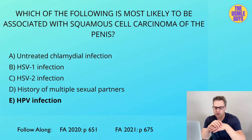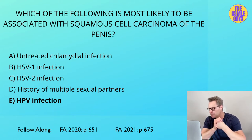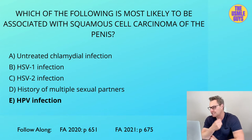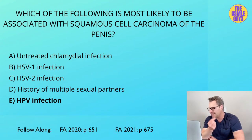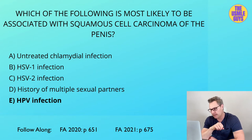A couple of known precursors of SCC of the penis include bowenoid papulosis, which is a premalignant focal epidermal dysplasia characterized by reddish to brown colored papules on the genitalia. Cutaneous squamous cell carcinoma in situ, also known as Bowen's disease, usually presents as an erythematous, well-demarcated scaly patch or plaque in sun-exposed areas, and this could be a precursor to squamous cell carcinoma of the penis.